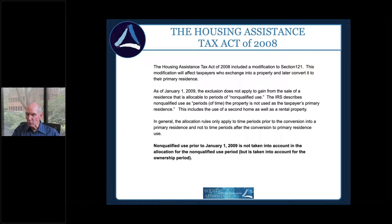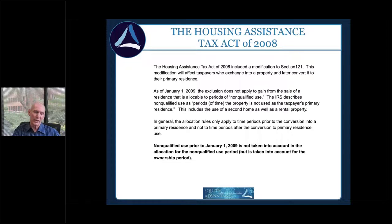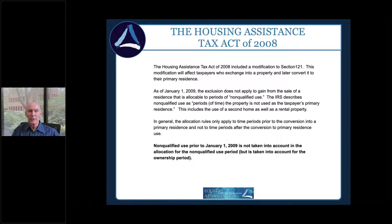My advice today: if you're going to exchange into a property and ultimately convert it to your primary residence because you plan to live there for the foreseeable future, do it. But if you're doing that transaction purely to eliminate tax exposure, don't — because the Housing Assistance Tax Act prohibits you from taking full advantage of the $250,000 or $500,000 exclusion. Also understand the tax liability during seasoning periods when you convert a home into an investment.